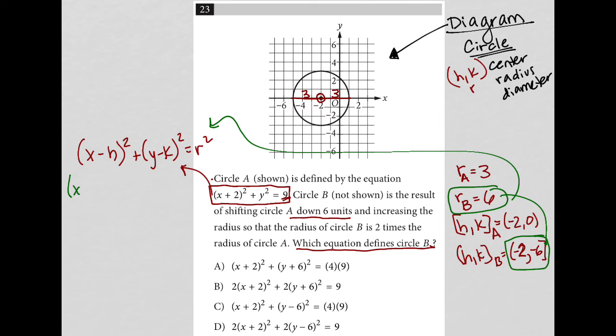So I'd have x and then minus h. Well, what's my h value? My h value is negative 2, so a minus negative 2 will make this plus 2 here, squared, and then plus y, and then minus k. Well, what's my k value? Negative 6. So a negative negative 6 will make that a plus 6 here, and then what's my r value? My r value is 6, so a 6 squared would be 36 there. So I just plugged everything in.